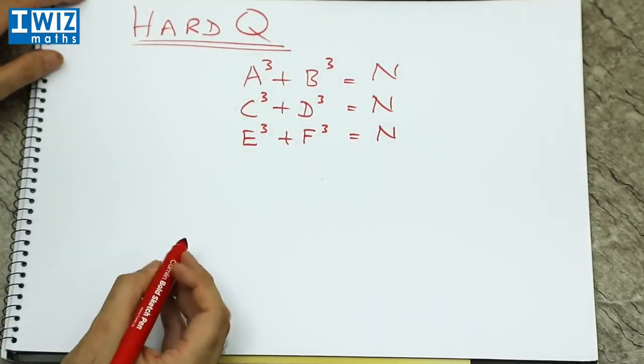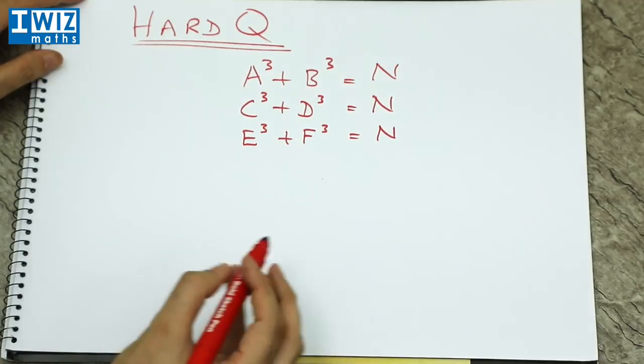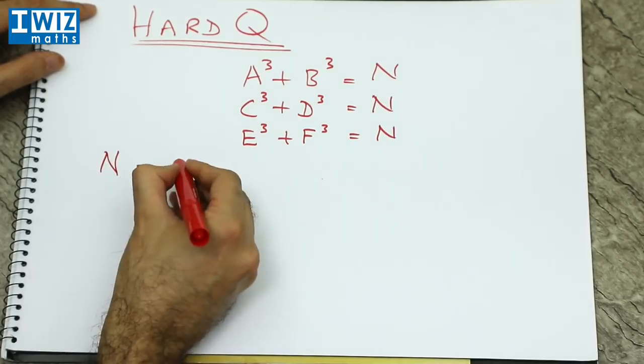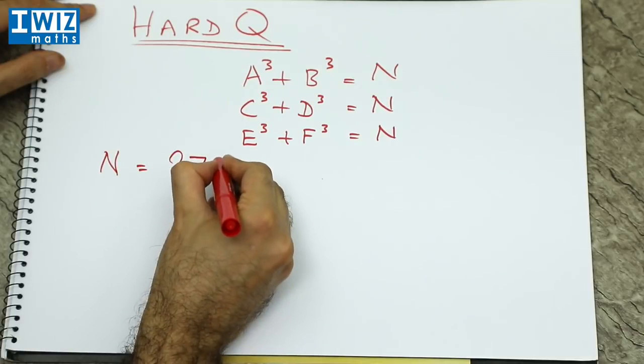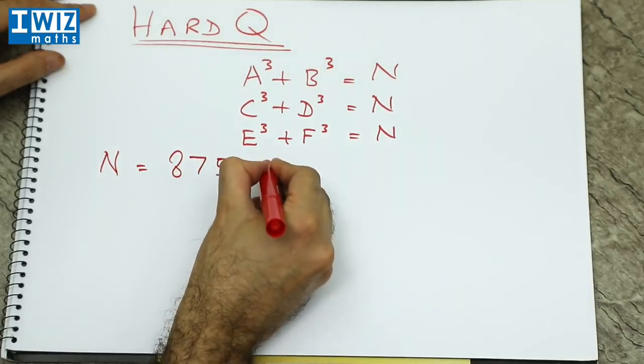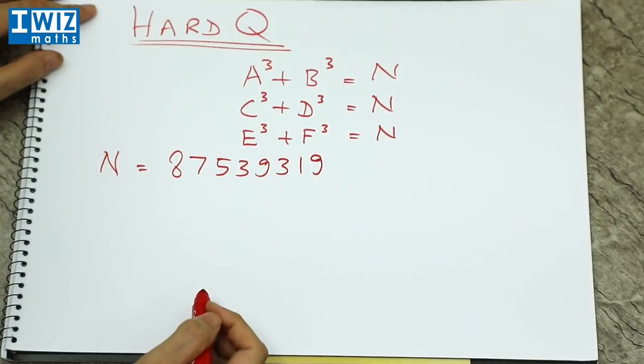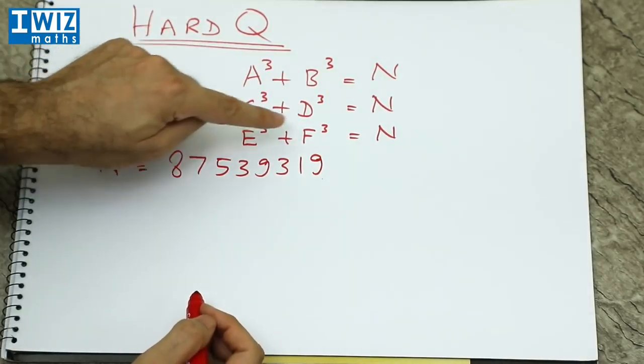Now if you really want to be brave you can go ahead and try it but if you just want to know the solution then keep watching. The number n is a rather large number it is 87539319. And the question now is what are A, B, C, D, E and F.